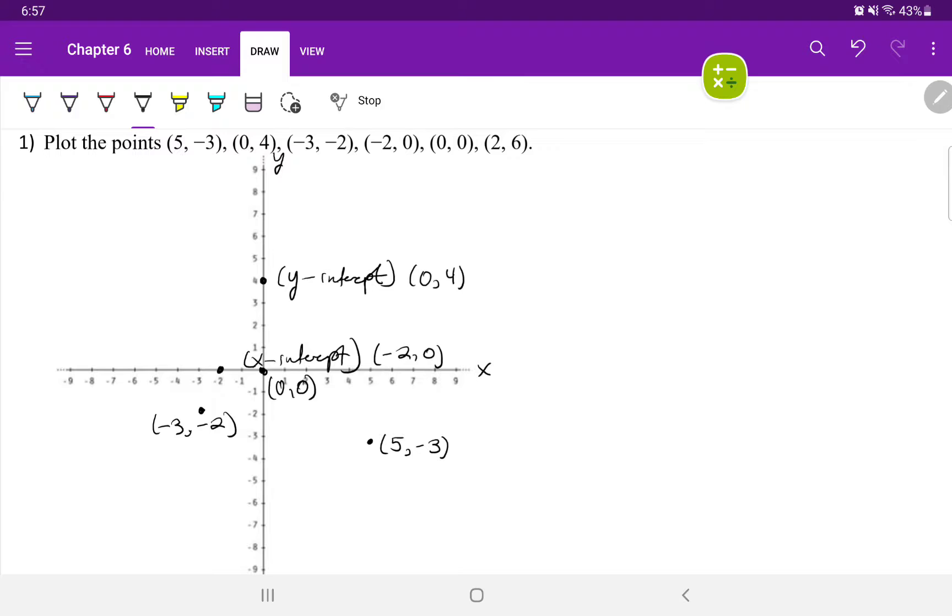And the last point of (2, 6). Start from the origin. Move two over to the right. Move six up. We'll be right here.